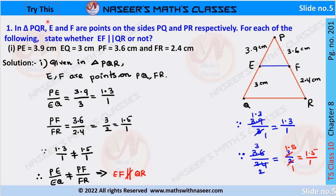We are going to solve page number 201, chapter on similar triangles. In this problem it is given that triangle PQR, where E and F are two points on sides PQ and PR respectively. We need to determine for each of the following statements whether EF is parallel to QR or not. The values of PE, EQ, PF, and FR are given.